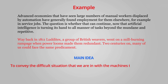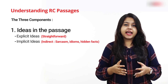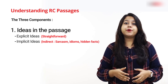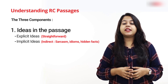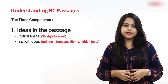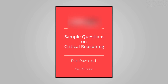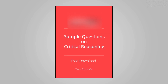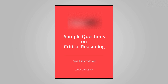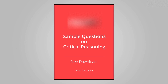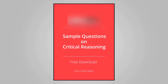From this, we are able to derive the implicit meaning to get the main idea. The main idea in this passage is to convey the difficult situation we are in with machines taking over jobs. This is the basis of analytical reading and will help you in answering inferential and critical reasoning questions in the GRE. If you are struggling with critical reasoning questions, download our free ebook on sample critical reasoning questions with explanation.